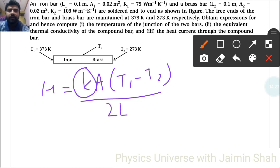We found K, that formula K is equal to 2K1 K2 upon K1 plus K2. Area is fixed, it is 0.02, T1 is 373, T2 is 273, L is 0.1. So by putting all the values, we will get our heat current.